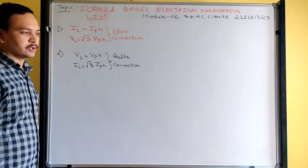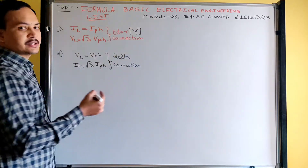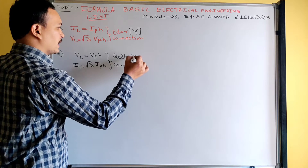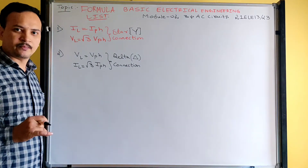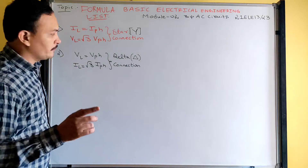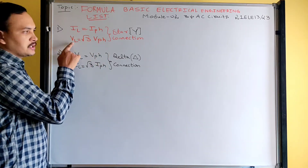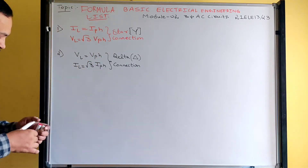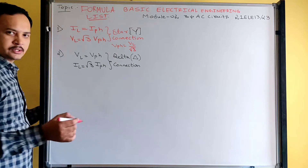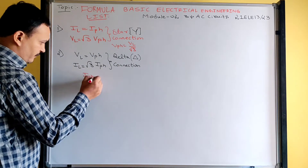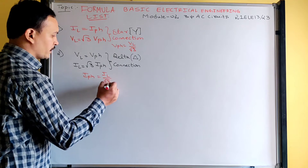In problems, star connection may be given with the letter Y — this Y indicates star representation. For delta, they will give a triangle symbol; when you see that symbol, understand it is delta connection. In a problem, if they give line voltage and ask to find phase voltage, use the relation: phase voltage = line voltage divided by root 3. Similarly, phase current = line current divided by root 3.